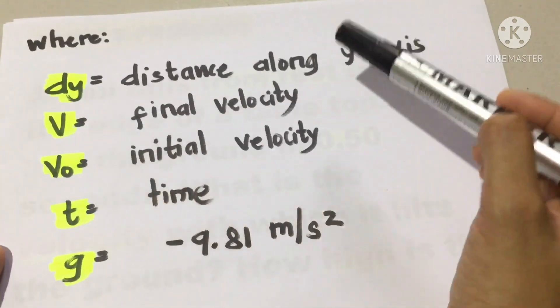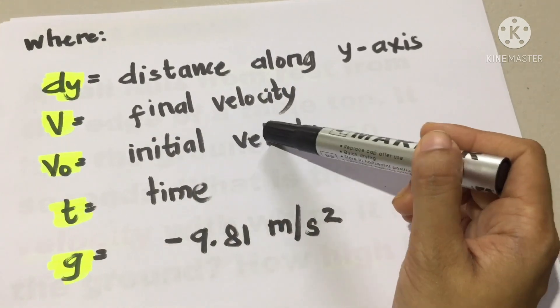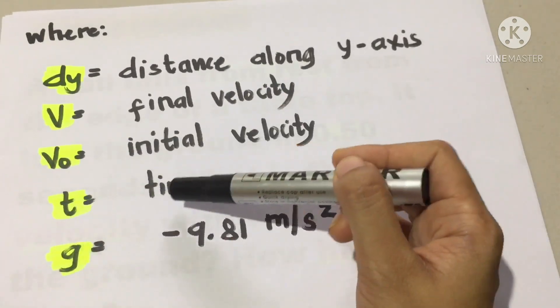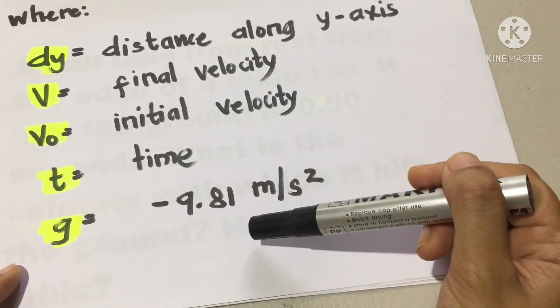So to clarify the quantities: we have here ∆Y, that is distance along the Y axis. Final velocity is V. Our initial velocity, that is V₀. For our time, that is T. And of course, our gravity is equal to negative 9.81 meters per second squared.